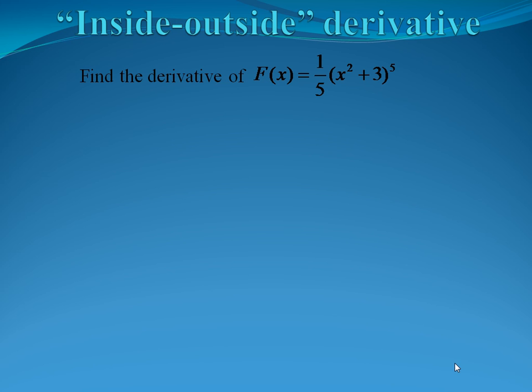Let's start with how we used to calculate derivatives using the chain rule, so we can see how we would apply this to antiderivatives. Let's find the derivative of one-fifth times (x squared plus 3) all raised to the fifth power. When you have something in parentheses raised to a power and you want to make a substitution, we let our substitution equal whatever is in the parentheses. So here, we let w equal x squared plus 3, and we can rewrite our original function as one-fifth w to the fifth power.